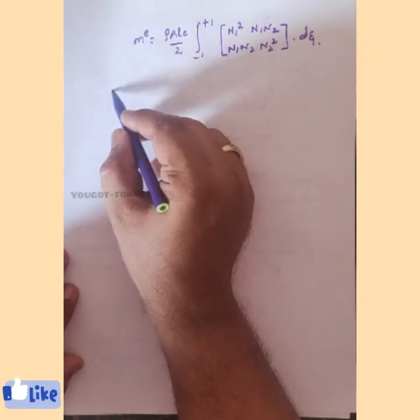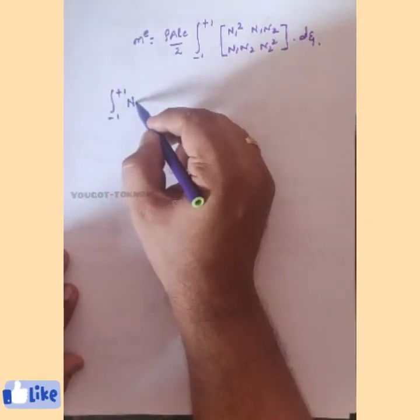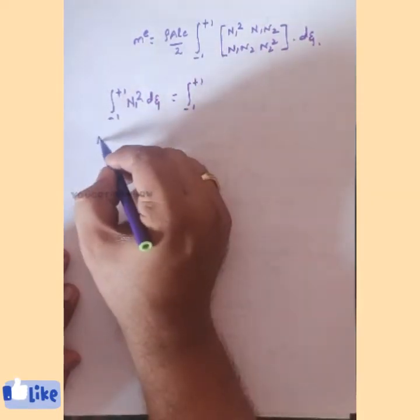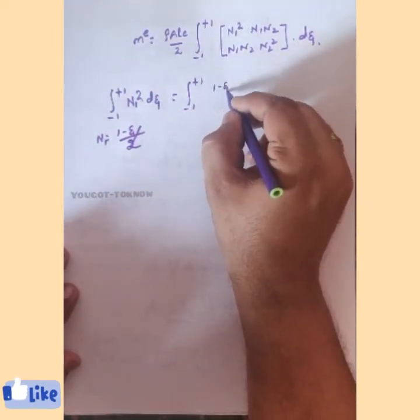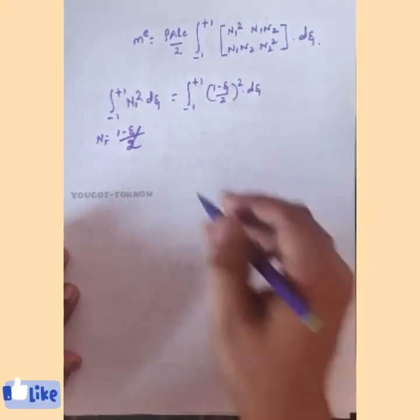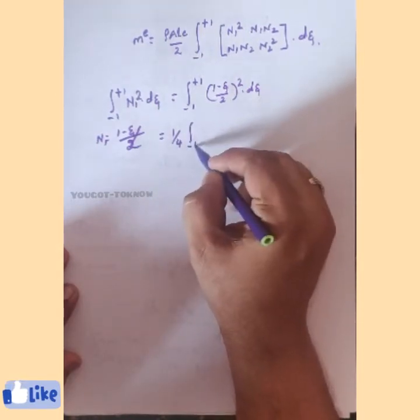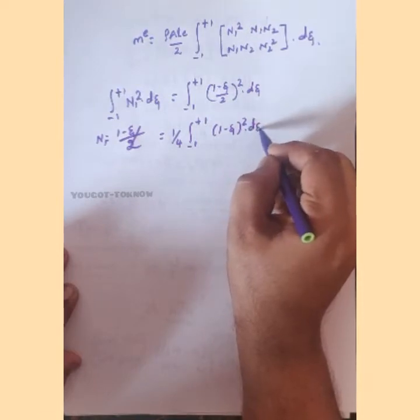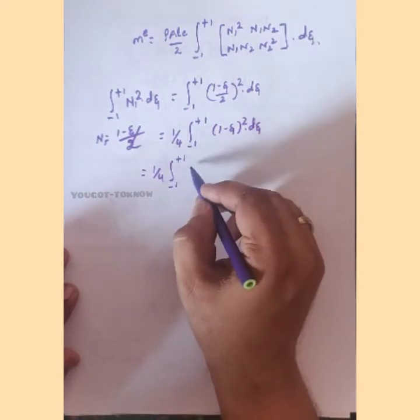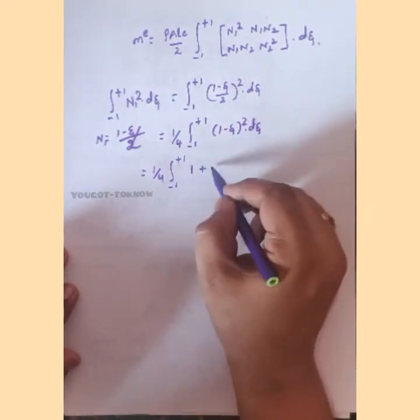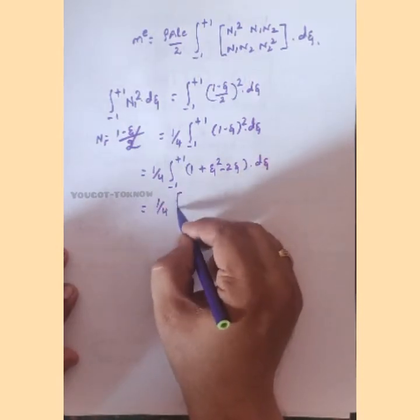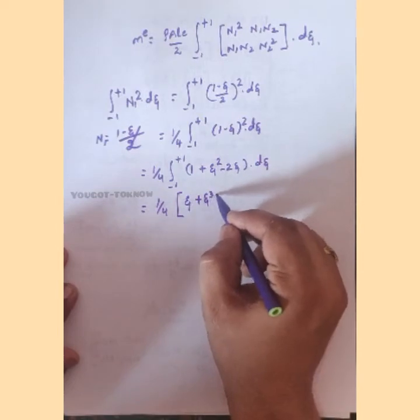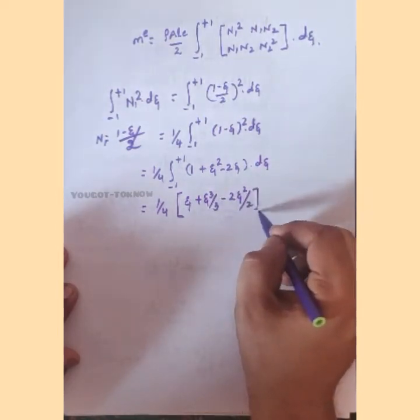We now integrate each term individually. For the first term, the integral from minus 1 to plus 1 of N1² d-zeta. Substituting N1 equals (1 minus zeta)/2, this becomes (1/4) times the integral from minus 1 to plus 1 of (1 minus zeta)² d-zeta. Expanding: (1/4) times the integral of (1 plus zeta² minus 2·zeta) d-zeta. Integrating gives (1/4)[zeta plus zeta³/3 minus zeta²] evaluated from minus 1 to plus 1.